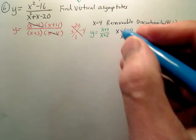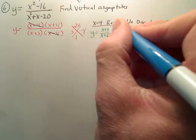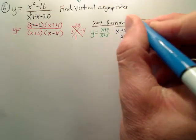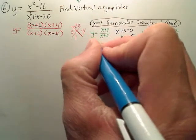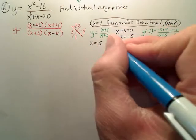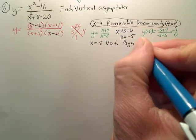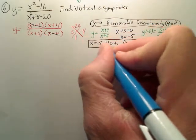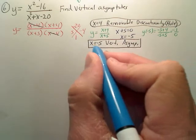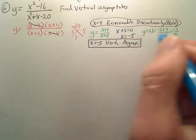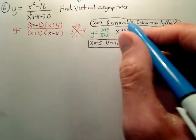So your answer is: that is a hole, which you probably want to write for the test. And the other one is x equals negative 5 is a vertical asymptote. X equals negative 5 is the equation of a vertical line—that's a vertical asymptote, number over 0. This is a hole.